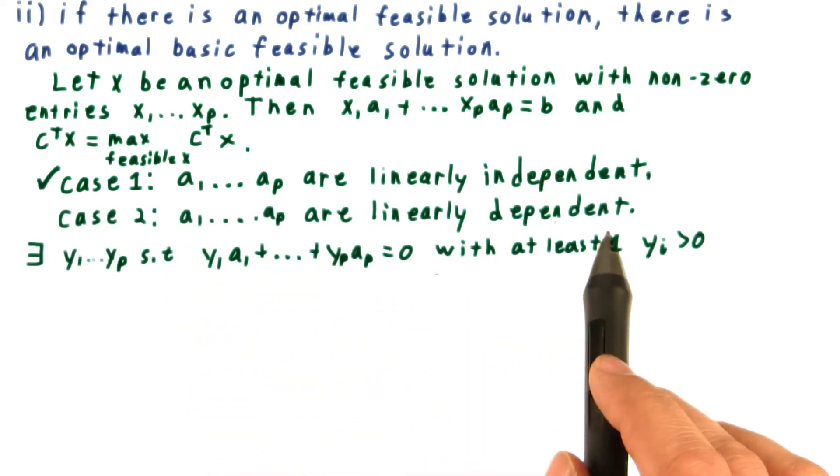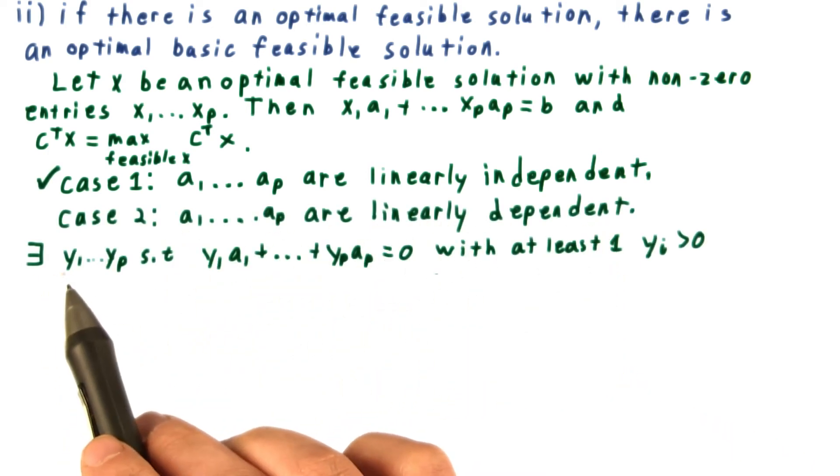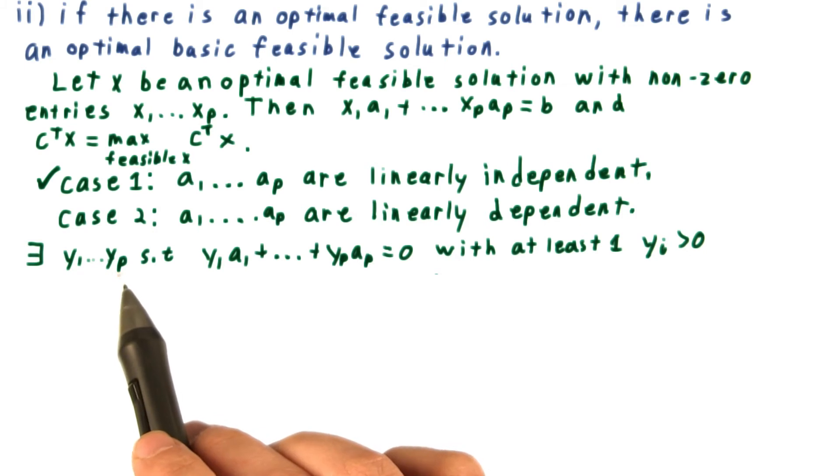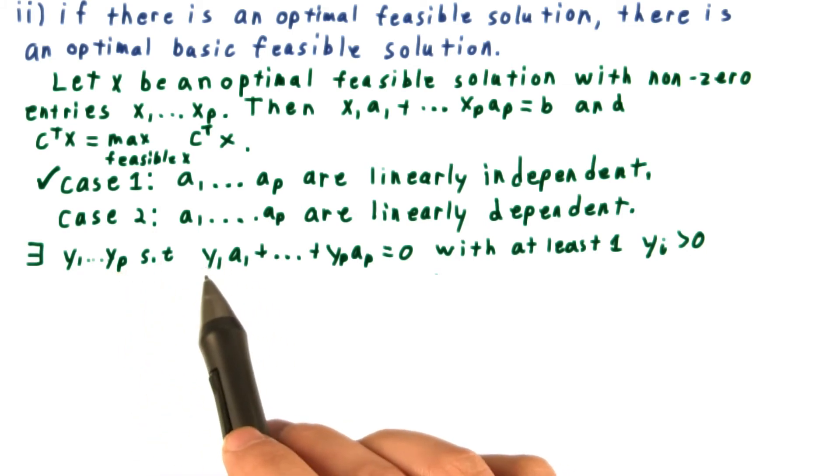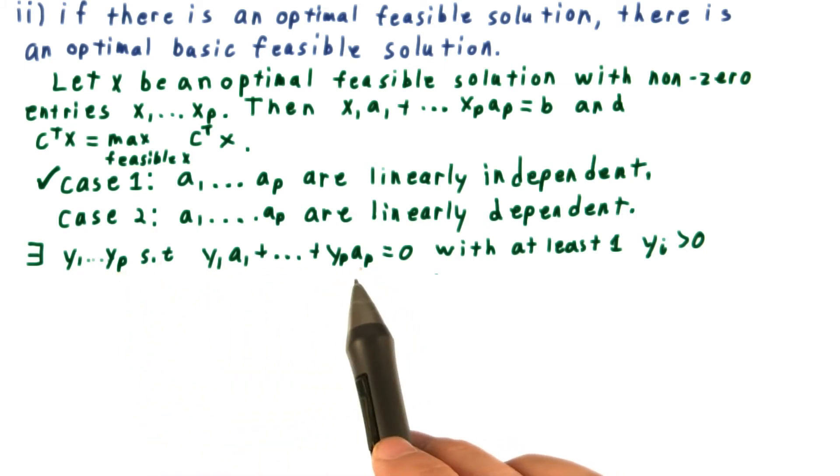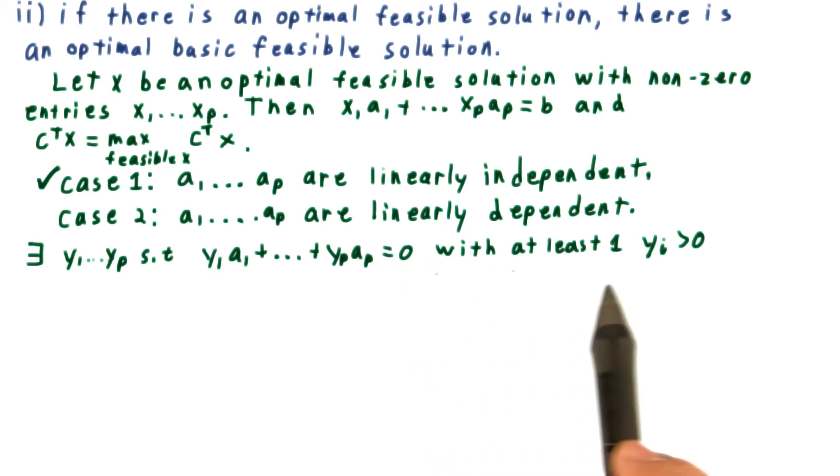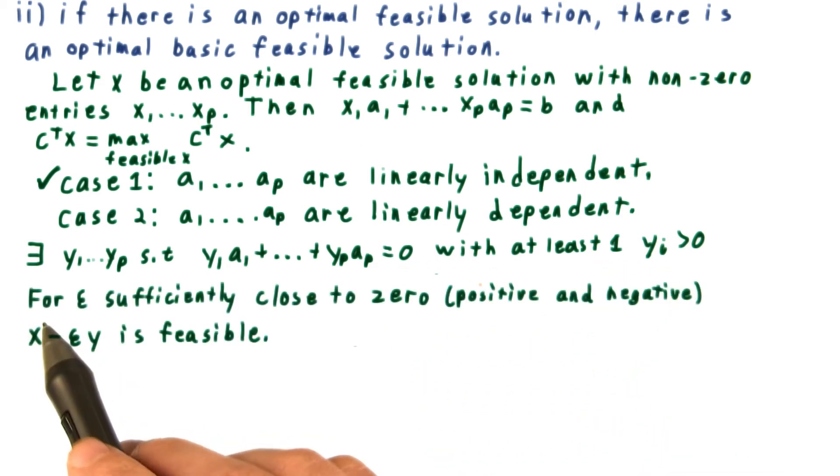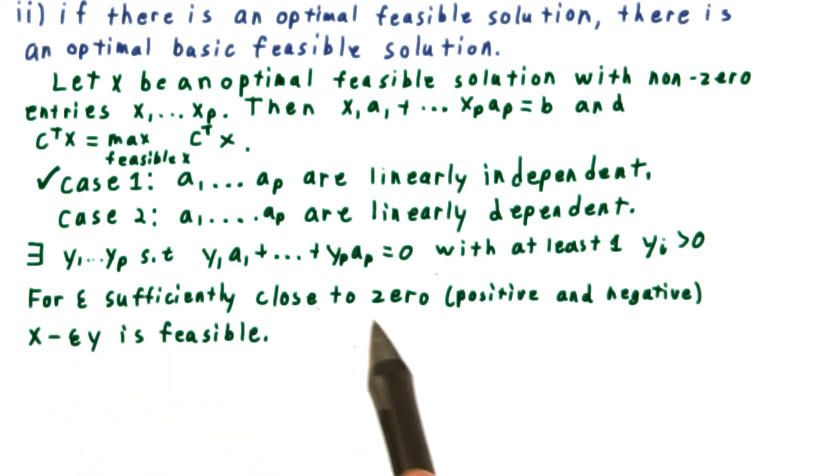If these columns are linearly dependent, then there exists a set of coefficients y1 through yp, such that the linear combination of the columns is equal to 0, with at least one of the y's being positive. Note, however, for epsilon sufficiently close to 0, in both the positive and the negative direction, x minus epsilon y is still feasible.